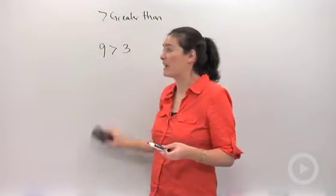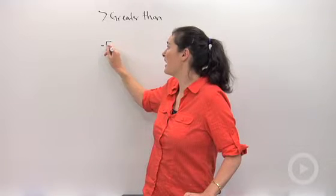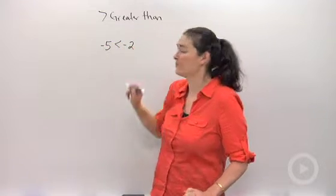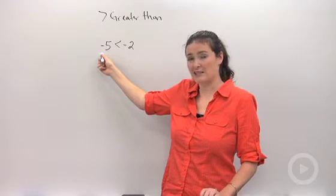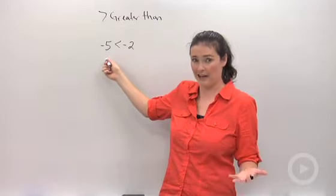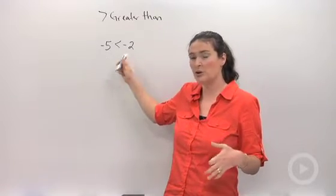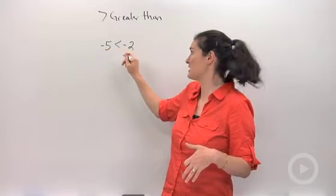I could also write some number is less than another number, like negative five is less than negative two, because negative five has a smaller value than negative two. It's kind of tricky, right, because five would be a bigger number than two, but when you negativize them, it becomes negative five is less than negative two.